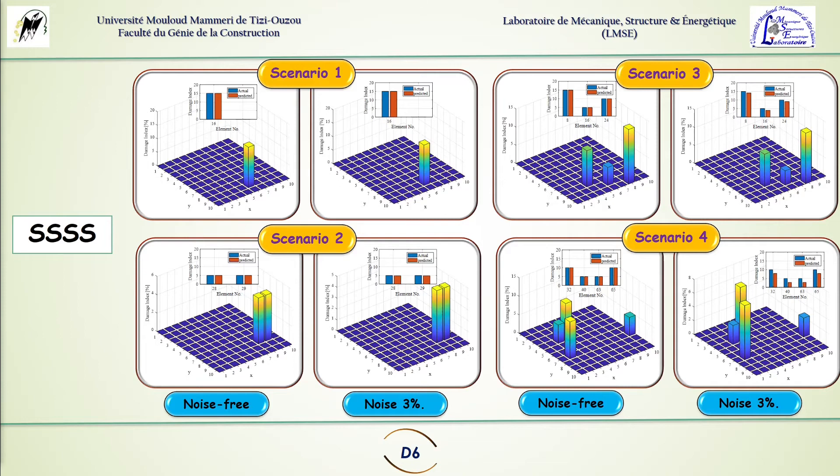In this slide we show the performance of the suggested approach in the four damage scenarios in the S-boundary conditions. In each scenario we show on the left the case where we use frequency without noise and on the right where we use frequency with 3% noise. The results suggest that there is good performance in the first and second scenario with acceptable performance in the third scenario and some challenging results in the fourth scenario with noise.